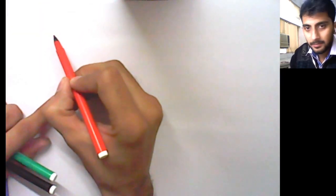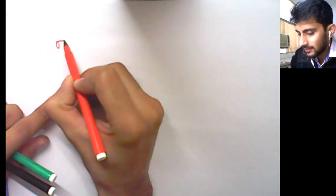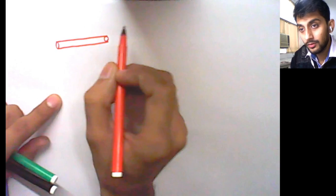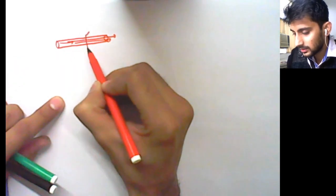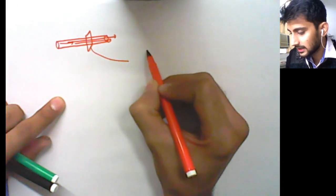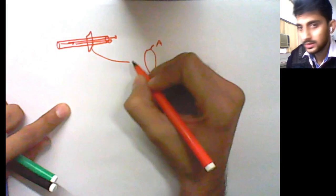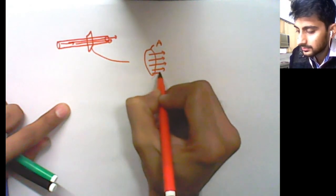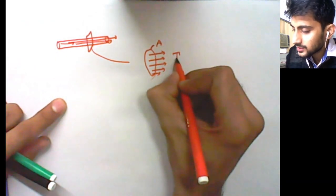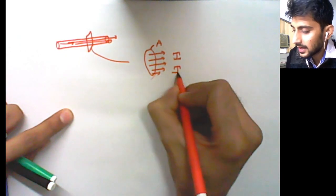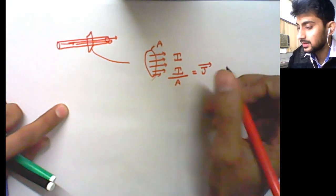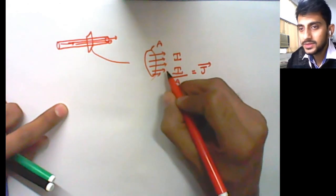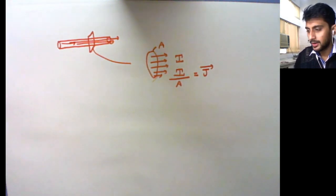We'll do Maxwell's fourth equation, but before starting we will define a term called current density. For example, you have a conductor and because of flow of electrons, a current is flowing across this conductor. If you zoom into one section, you have a small surface on which current is flowing. Let's say the current flowing was I. The current density is I by A, and we call this quantity a vector quantity because area is a vector quantity. This J is called the real current density, or simply current density.